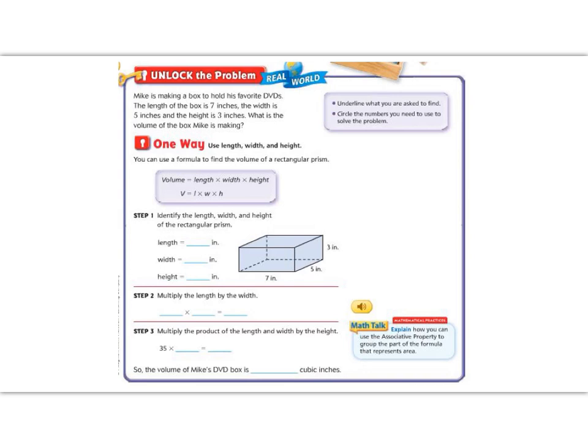Let's look to the purple box for information first. It says underline what you are being asked to find. We are being asked to find what is the volume of the box Mike is making. And it says circle the numbers that we need to use. So we know that the length is seven inches, the width is five, and the height is three.